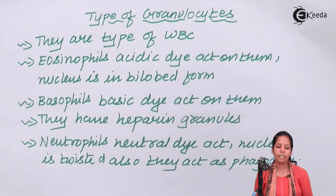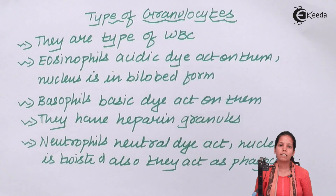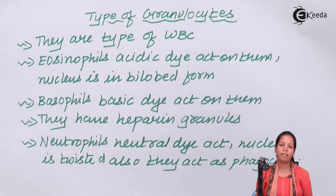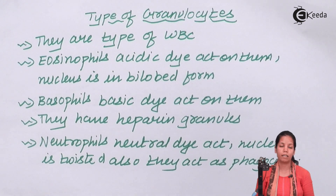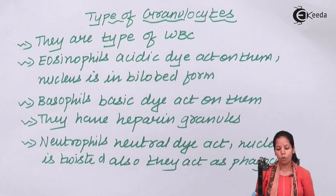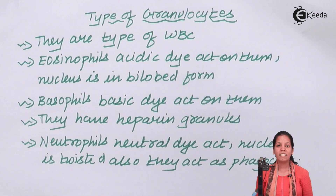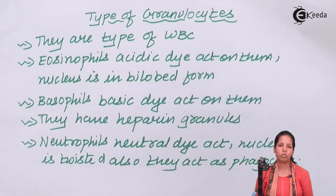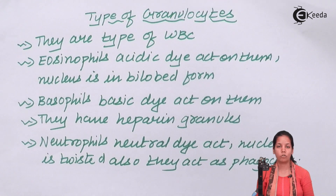Basophils are a type of WBCs that get stained by basic dye. If a blood sample is taken and there is an increase in basophils, the doctor will stain them and identify or count them on a hemocytometer. If there is an increase in basophils and many heparin molecules are associated with them, it could indicate an association with allergic reactions in the body.